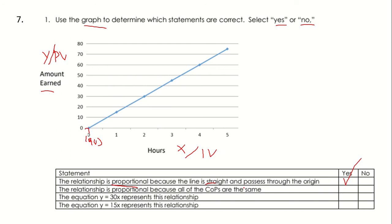Next, we have the relationship is proportional because all the COPs are the same. This one actually isn't true. We only have one COP. Our unit rates are all the same. However, there is only one COP, so this is going to be no.